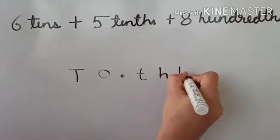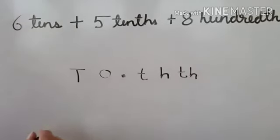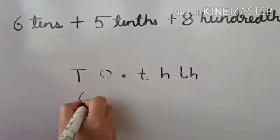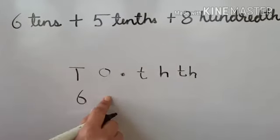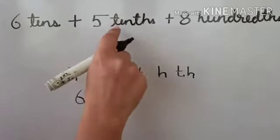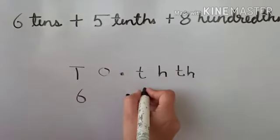Then places of decimal part: tenths, hundredths and thousandths. Further we write 6 at tens place. We don't have any number for ones place. Then decimal point, then 5 at tenths place.